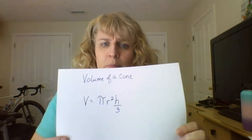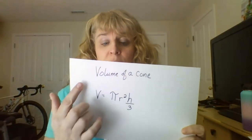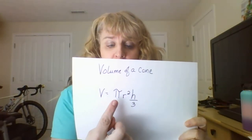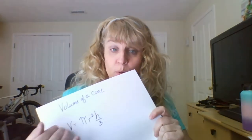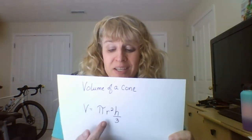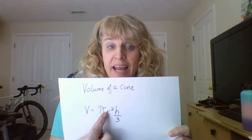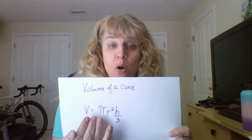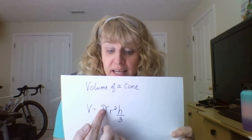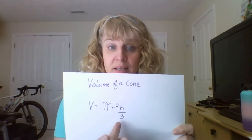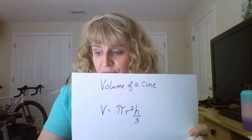The formula for volume of a cone is similar but different: v equals pi r squared h divided by 3. When applying the order of operations, we have to take the powers first, but after that, since it's all multiplication and division, we can work through it in order.